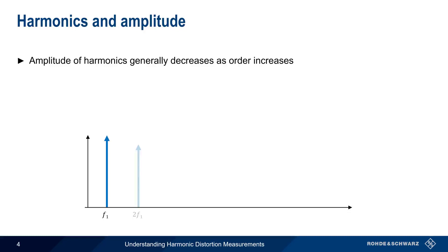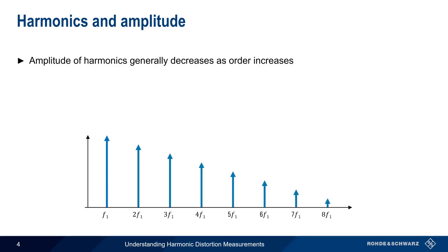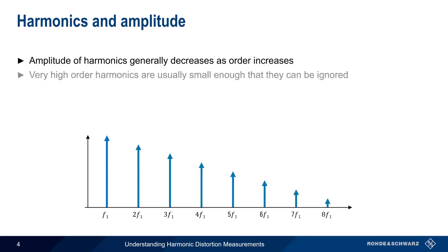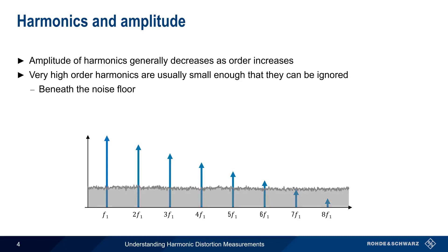In other words, the second harmonic has lower amplitude than the fundamental, the third harmonic is lower than the second harmonic, etc. Theoretically, there can be an infinite number of harmonics, but at some point the harmonics become so small that they can be safely ignored, since they fall below the noise floor.